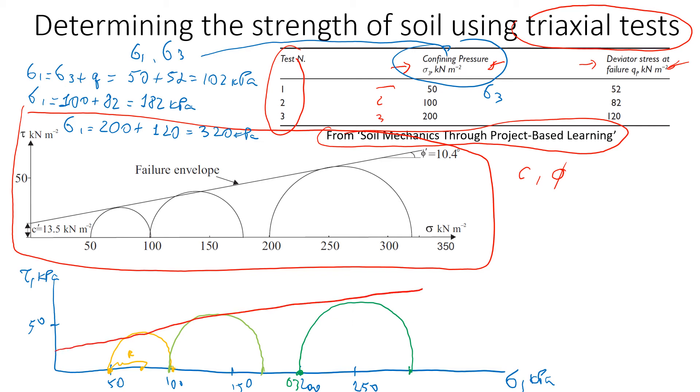Something like this. When you draw these lines, you need to use rulers. Ideally it should touch all the circles. Let's say it goes this way.